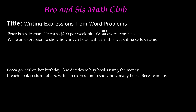Always underline, circle, or highlight your key terms — this can always be helpful when writing expressions from word problems. Reading through this, the key terms are: he earns $200 per week — that's a number, one of the components of an expression. Then 'plus' tells us the operation we need, which is addition. And $8 on every item that he sells.